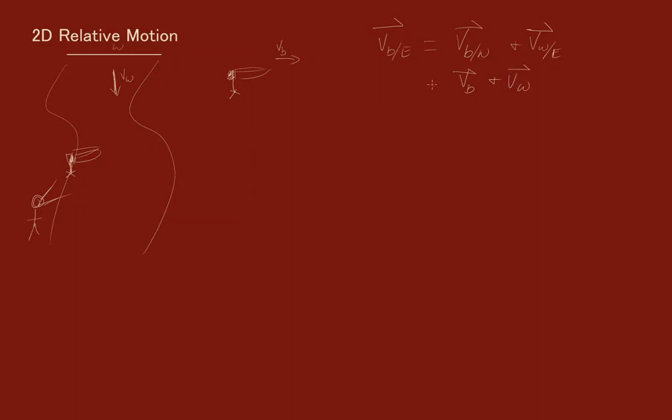If the boat is heading directly across, we take V_B and add it to V_W. We can use the Pythagorean theorem to get our answer: the magnitude equals the square root of V_B squared plus V_W squared.